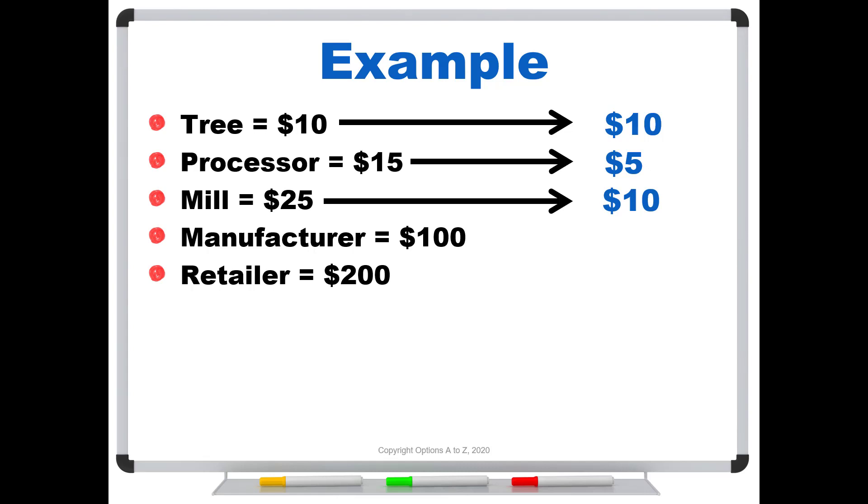The manufacturer pays 25, sells it for 100. They've added $75 worth of value. The retailer who pays 100 and sells it for 200 adds $100 worth of value. So if you add up this final column here in blue, you'll see that you get 200, exactly the same number as our retailer right here, the end user, $200.